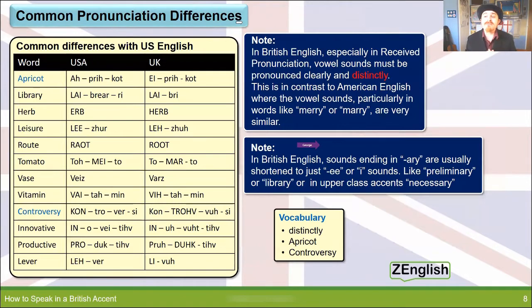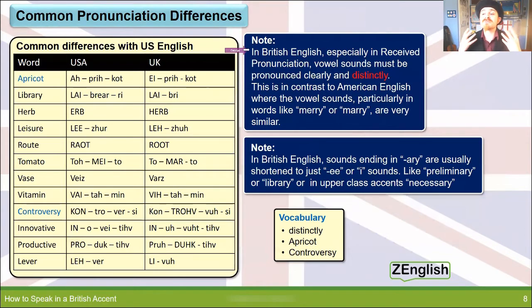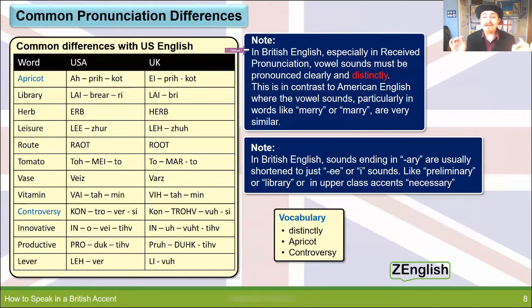Here are some really common examples where sometimes British and American people just don't understand each other. In British English, especially in received pronunciation — that posh, southern accent — vowel sounds must be pronounced clearly and distinctly. This is in contrast with American English, where vowel sounds, particularly in words like merry or marry, are very similar.